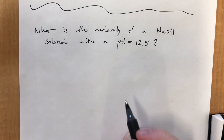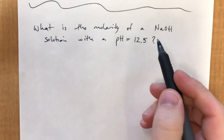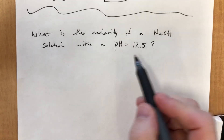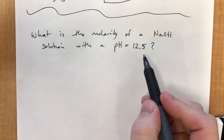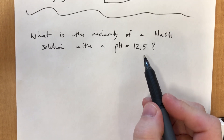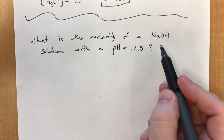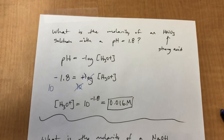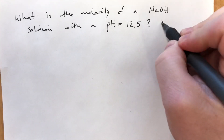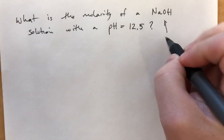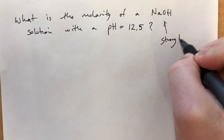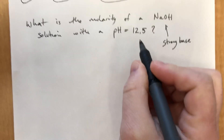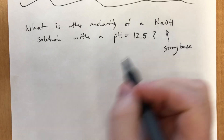We are going to try to determine the molarity of an NaOH solution, which is a strong base, and it has a pH of 12.5. Because this is a strong base — like before we had a strong acid — this means we're going to need to do things in terms of pOH.